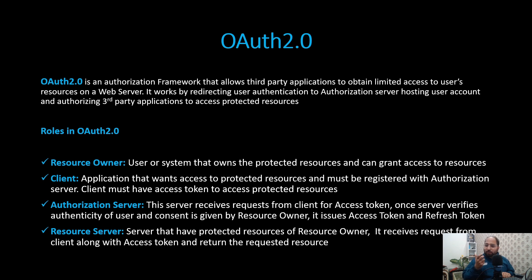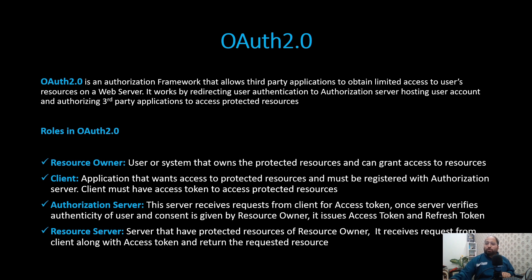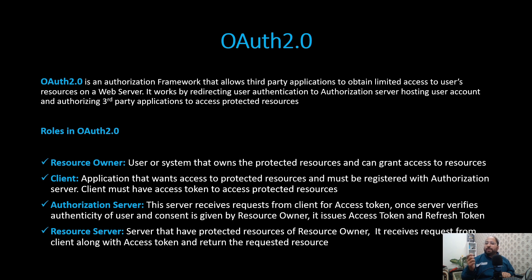So how can it obtain the access? It can obtain the access with the help of OAuth 2.0. As soon as the third-party application tries to access the user resources, it will be redirected to the authorization server where the user needs to enter the credentials. As soon as the credentials are entered and the user has clicked on grant permissions, the authorization server will issue one access token, and that access token can be used by the third-party application to access the protected resources. So this is how the entire flow works.